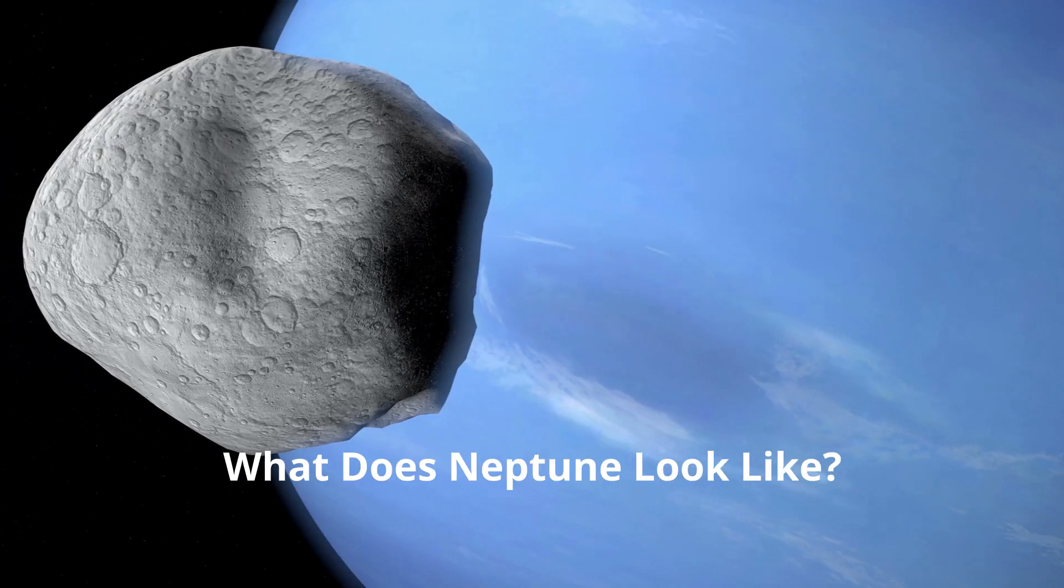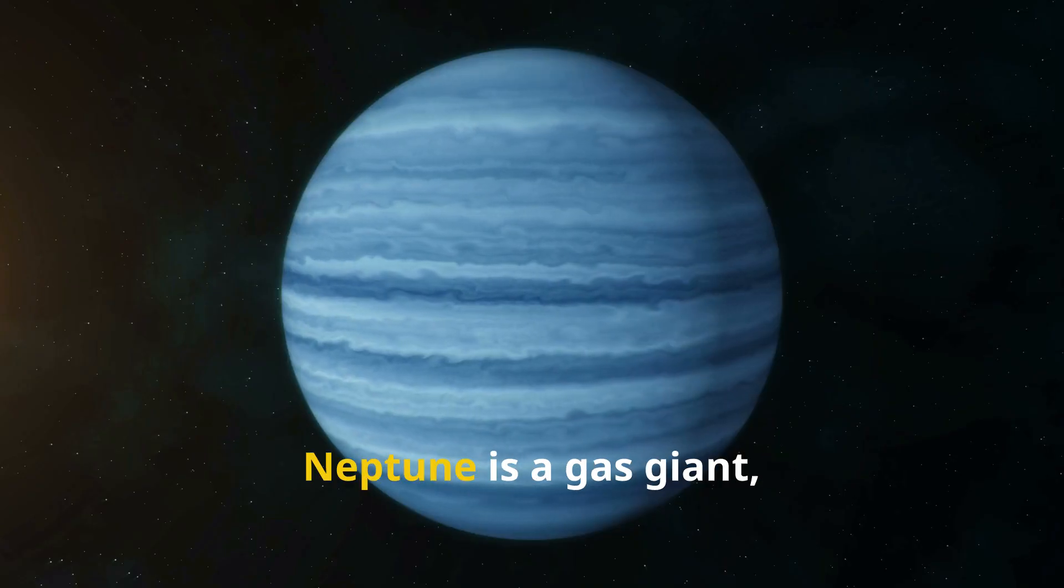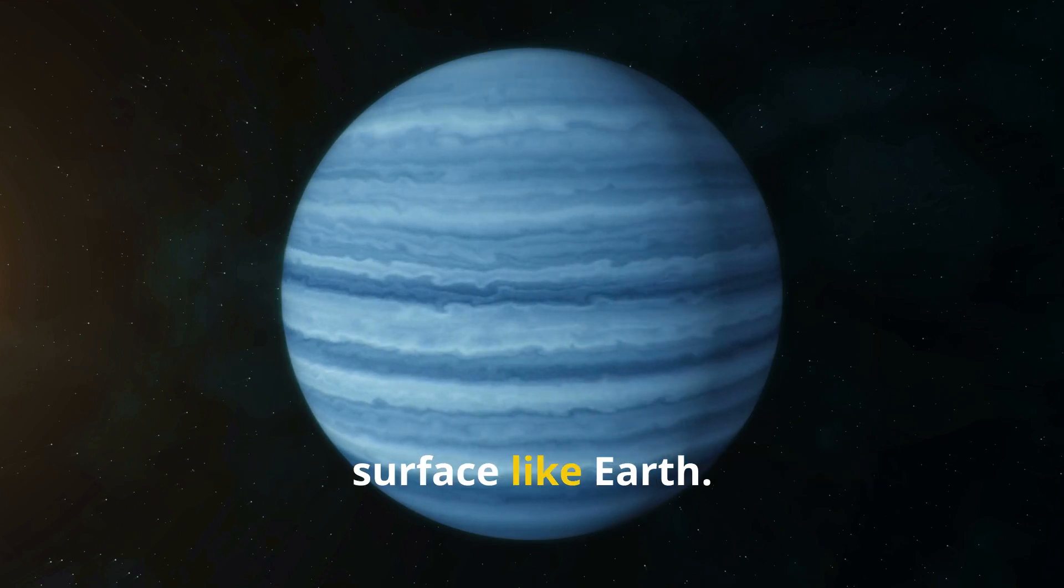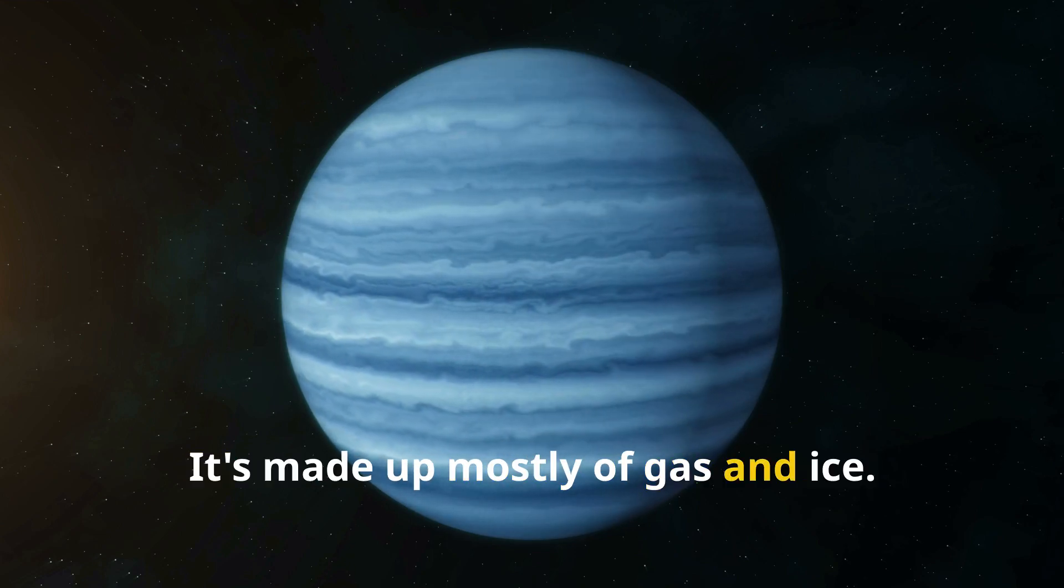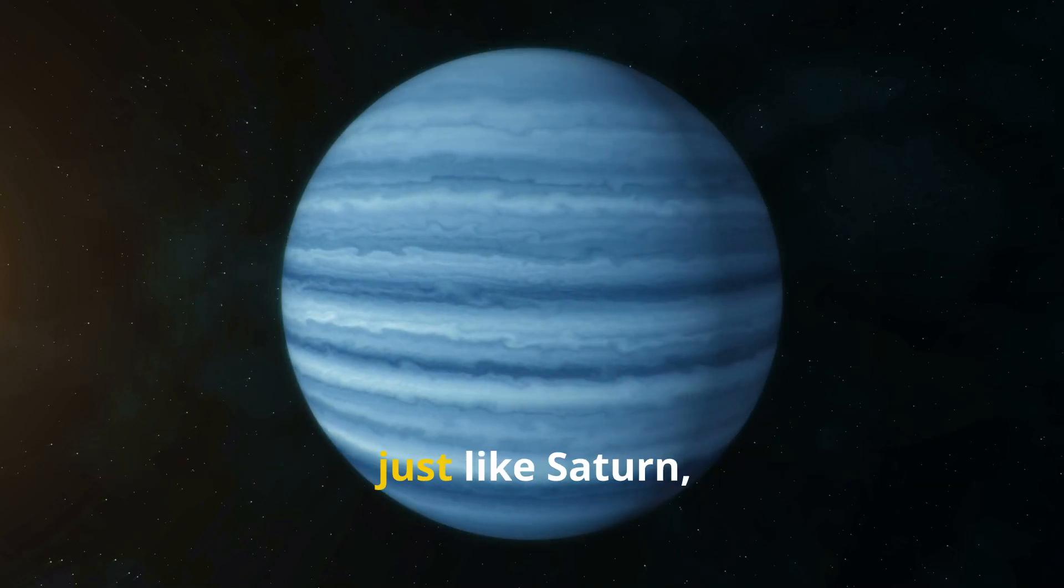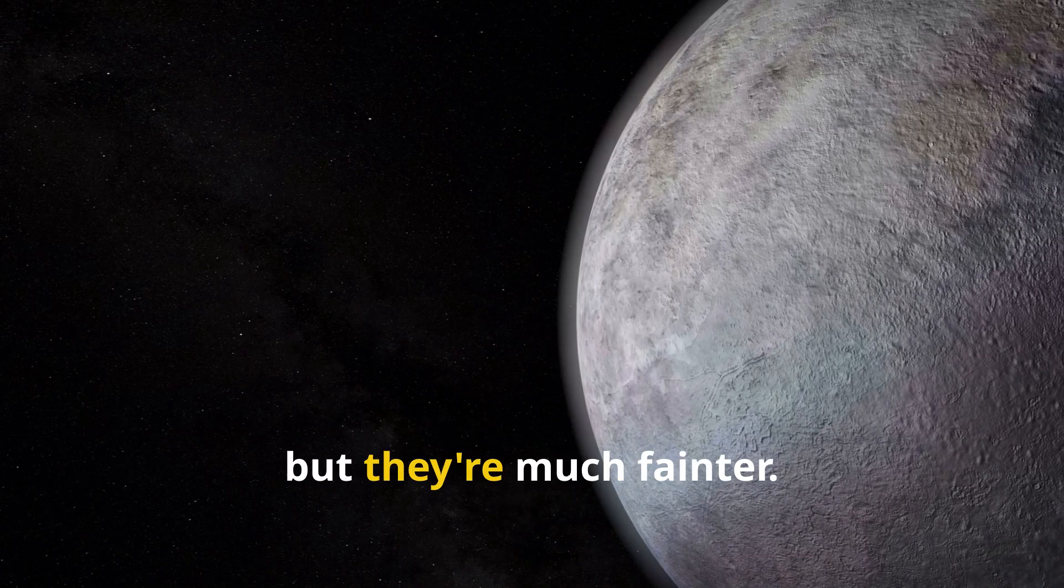What does Neptune look like? Neptune is a gas giant, which means it doesn't have a solid surface like Earth. It's made up mostly of gas and ice. It has swirling clouds and powerful storms, and it even has rings just like Saturn, but they're much fainter.